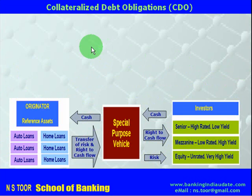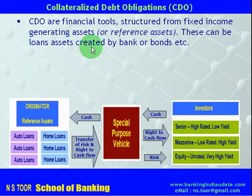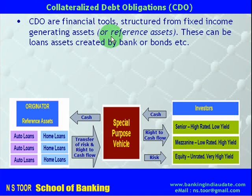Collateralized Debt Obligations, i.e. CDOs, are financial tools structured from fixed income generating assets. These fixed income generating assets are also called reference assets, and these can be in the form of bank loans or bonds, etc.